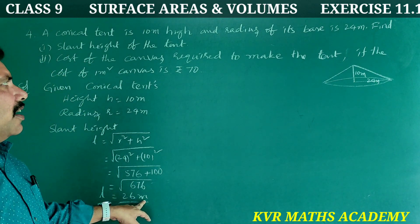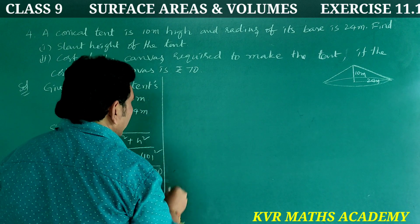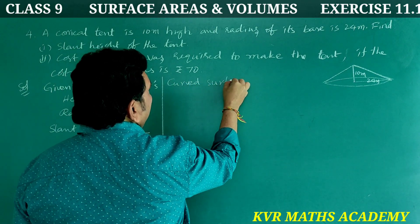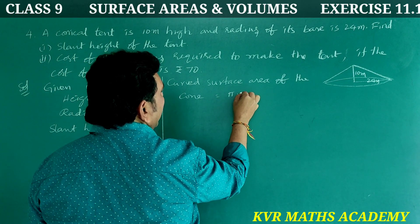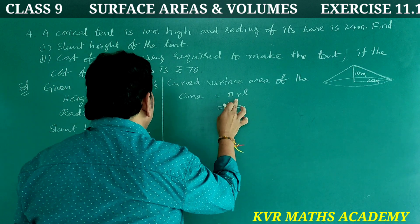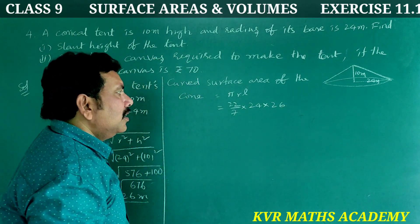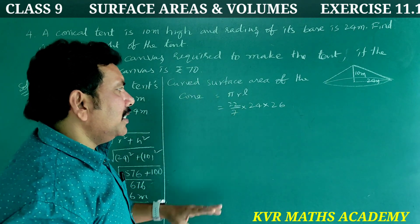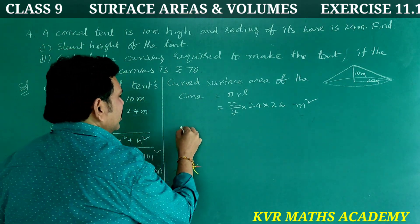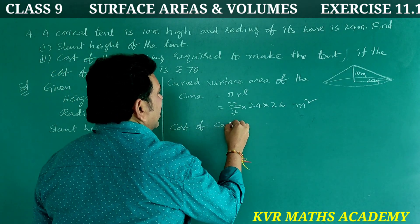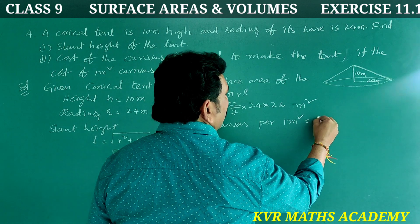Now we find the cost of canvas. The curved surface area of the cone = pi·R·L = (22/7) × 24 × 26. Simplifying gives 1,056/7 × 22 — the total comes to approximately 1,056 × 70 square metres. The cost of canvas per 1 m² is 70 rupees.